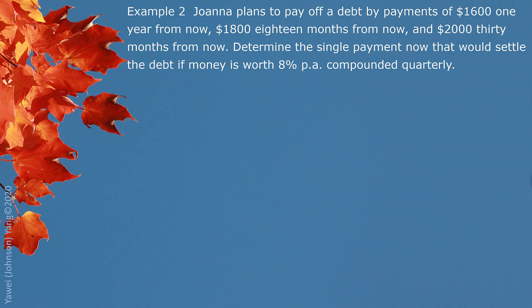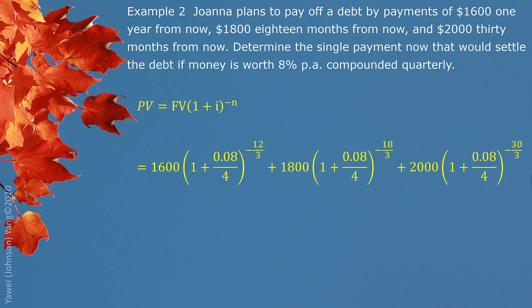Example 2: Joanna plans to pay off a debt by payments of $1,600 one year from now, $1,800 eighteen months from now, and $2,000 thirty months from now. Determine the single payment now that could settle the debt if money is worth 8% compounded quarterly. We have 3 debts to be paid together now as a single payment, so they should be equivalent. We find the equivalent value of each debt today and add them together, using the present value formula since the debts all occur in the future.